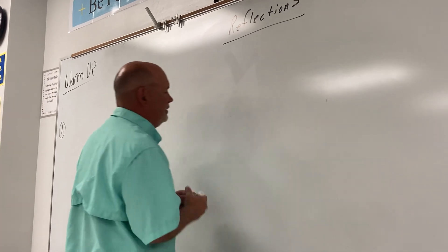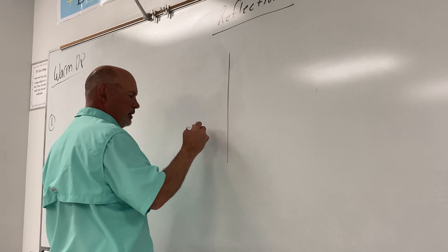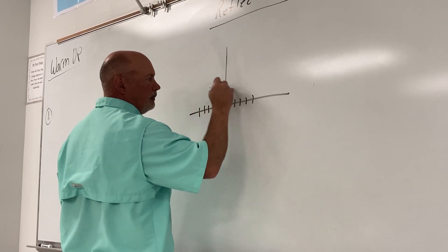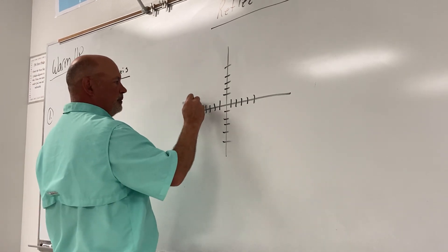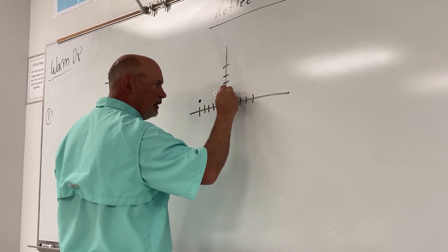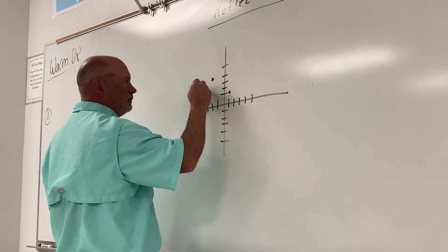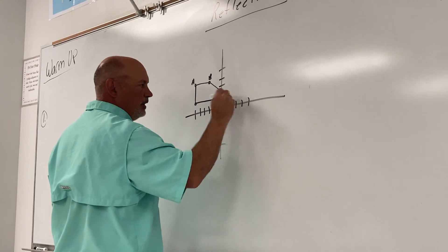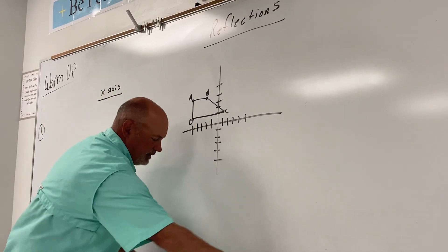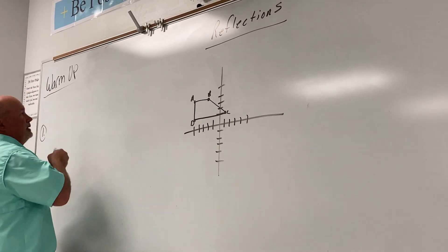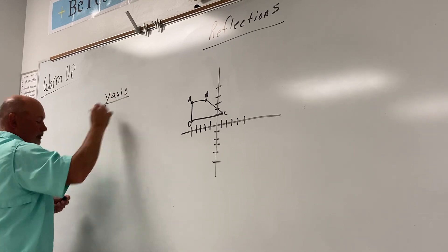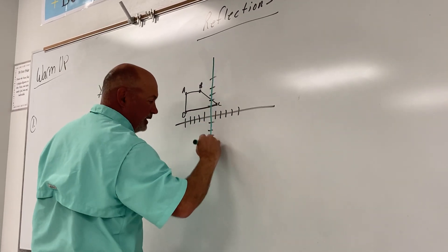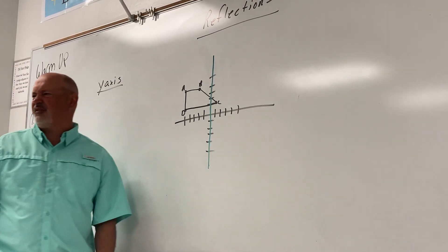Here's one that you might see on the homework that confuses a few kids — let's make sure it doesn't confuse you, because it's not hard. Let's make this object with points A, B, C, D and reflect it across the y-axis. On the homework, if you get a highlighter, I would definitely highlight the axis that you're flipping it over, especially on one like this.